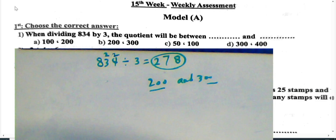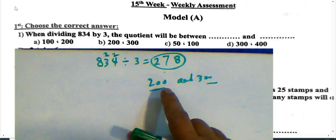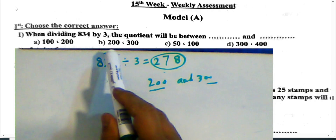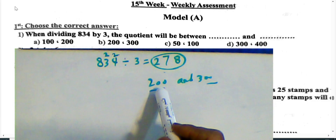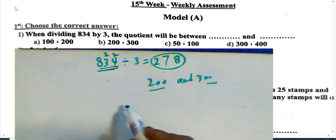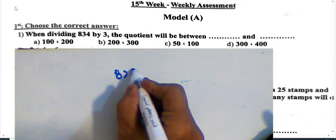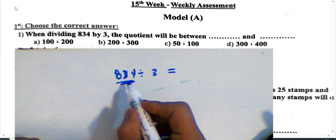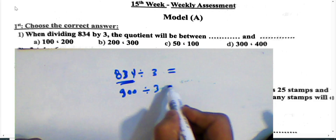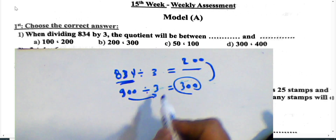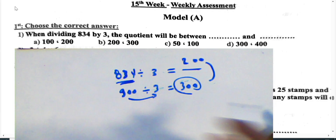Question 1: When dividing 834 by 3, the quotient will be between 200 and 300. Looking at it: 8 divided by 3 equals 2 with remainder 2; 23 divided by 3 equals 7 with remainder 2; 24 divided by 3 equals 8, giving 278, which lies between 200 and 300. Alternatively, approximate 834 to the nearest hundred: the next number divisible by 3 is 900, and 900 divided by 3 equals 300, so the answer lies between 200 and 300.